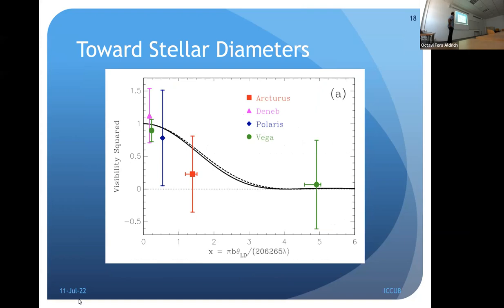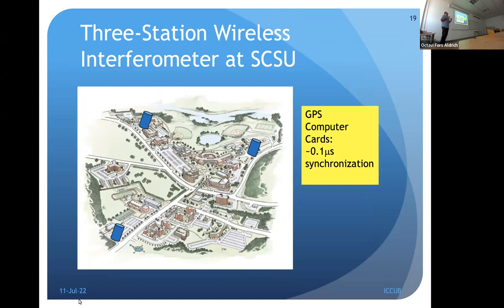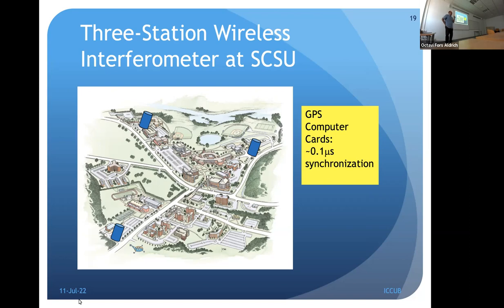We've developed a visibility curve for a couple of bright stars and can start measuring stellar diameters. The dream is to see an exoplanet transit across its host star. Our university campus is about a kilometer in diameter, so we're preparing to place telescopes at the campus corners. We can't string cables over that distance, but we can outfit each telescope with a GPS clock to synchronize timing.